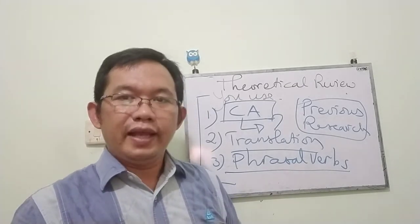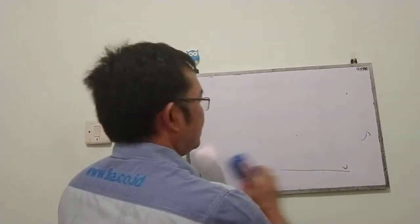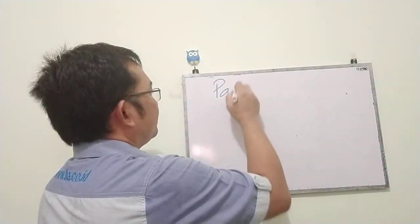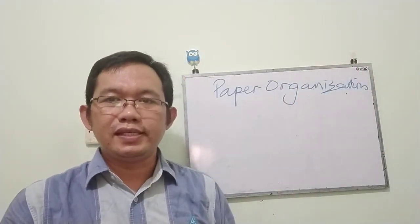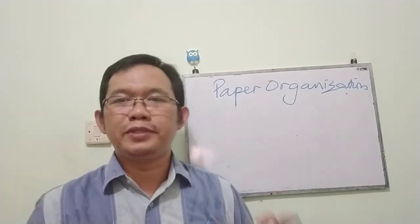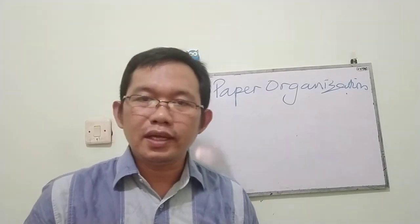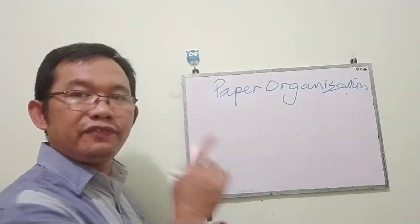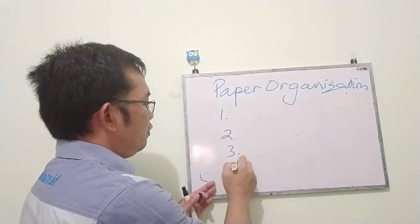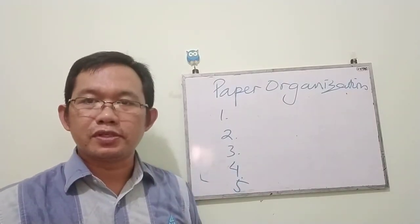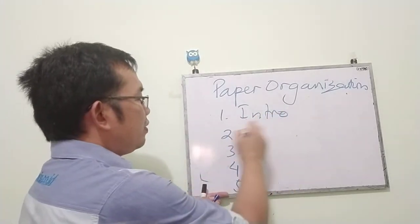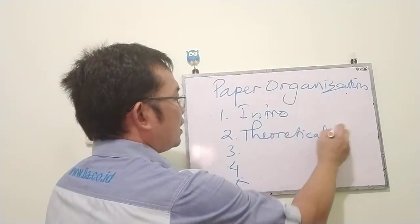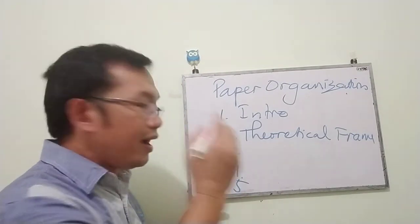Let's move to the last part of the proposal: paper organization. In this part, you explain how many chapters your research will have. Mostly, our research consists of five chapters. Chapter one is Introduction, chapter two is Theoretical Review or Theoretical Framework, chapter three is Research Methodology — as mentioned before, we have research methodology in chapter three — and chapter four is Analysis.